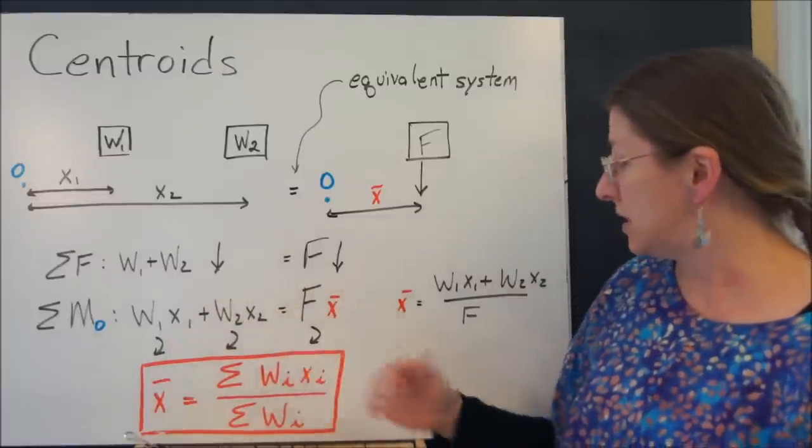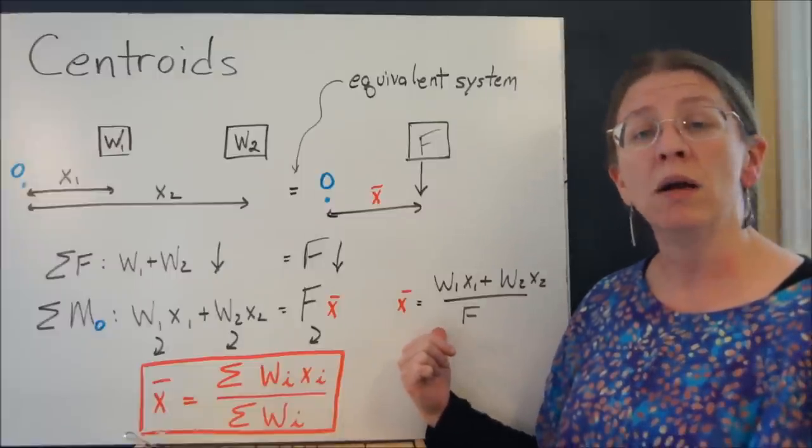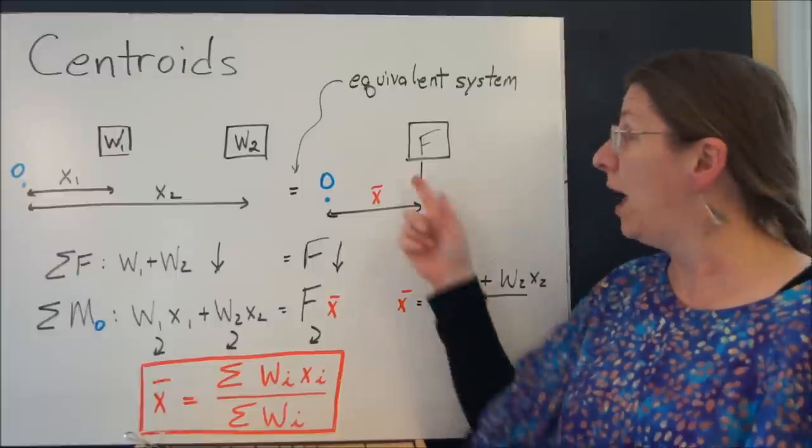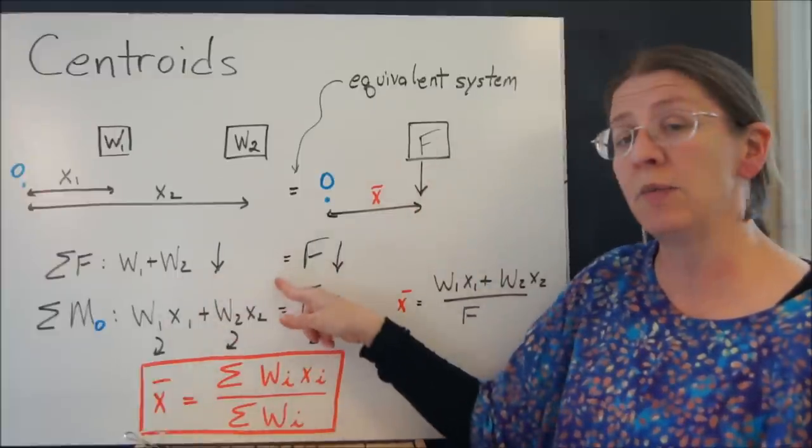But if you make these two the same, then what I have is that x bar is x1 w1 plus x2 w2 over F. But F is equal to w1 plus w2.